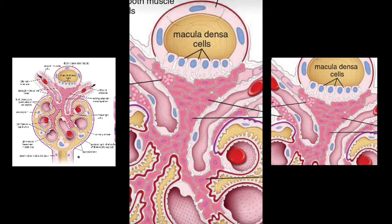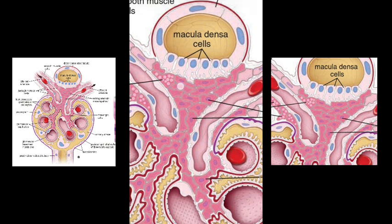The third component is the lacis cells, also known as extraglomerular mesangial cells. Their function is unknown, but since they form a lace-like network they are called lacis cells. They are located in the interval between the macula densa and the afferent and efferent arterioles.